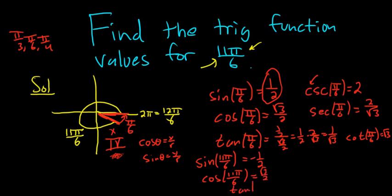Then tangent of 11 pi over 6. We're going to divide the negative and positive, so that's going to give us a negative, so negative 1 over root 3. And cotangent will also be negative, because we're just flipping it. So cotangent of 11 pi over 6 is negative root 3.